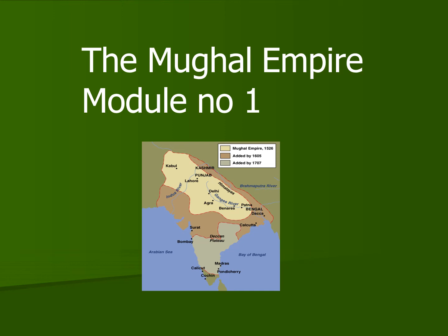Jai Hind children! Today we will be starting with the next chapter of history, that is the Mughal Empire, and this is going to be your first module. The basic learning objective behind this chapter is we will come to know about the number of Mughal sultans, how they established a very strong rule in India, what changes they brought in the administration, and how till today we are carrying that legacy.